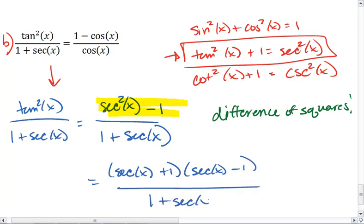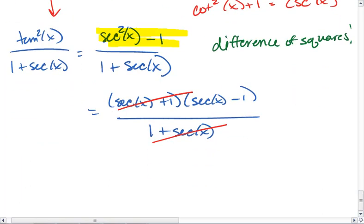And look at that, secant x plus 1 cancels with 1 plus secant x in the denominator, leaving just secant x minus 1.